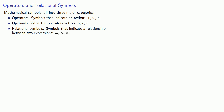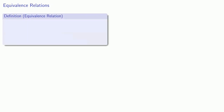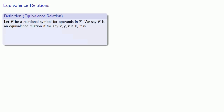So let's take a look at those relational symbols. To begin with, let's define an equivalence relation. Let R be a relational symbol for operands in some set F. We say R is an equivalence relation if, for any x, y, and z in our set, the following hold.